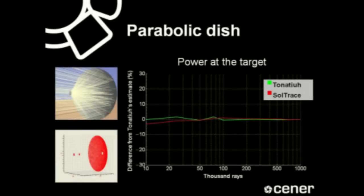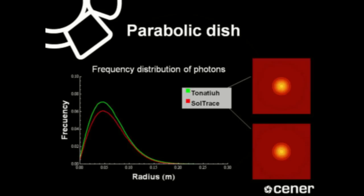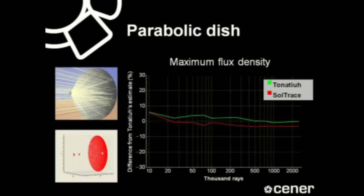For the parabolic dish, as the graph shows, the power at the target estimates of Tonatiuh and SolTrace were always very close to each other, even for relatively low numbers of photons cast. The differences in the frequency distributions of photons at the target were more significant, translating into a higher peak and smaller effective radius in Tonatiuh's flux distribution estimate compared to SolTrace's. Regarding the maximum flux density, differences between the two programs were less than 2.4% once the number of photons cast reached 1 million, and never exceeded 8% even for very low photon counts.